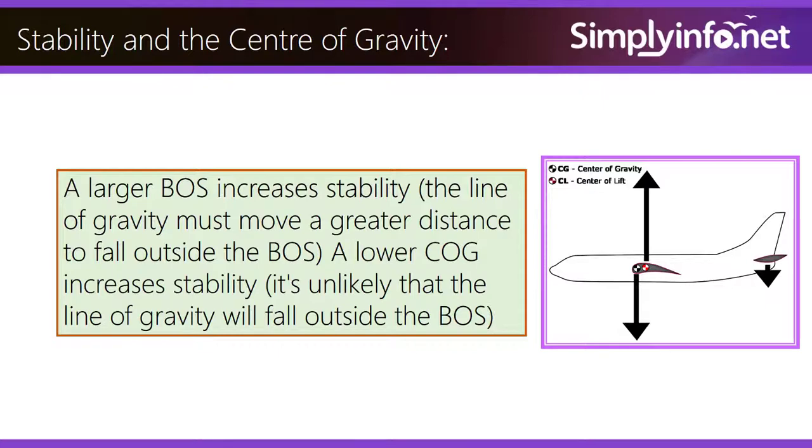A lower COG increases stability. It's unlikely that the line of gravity will fall outside the BOS.